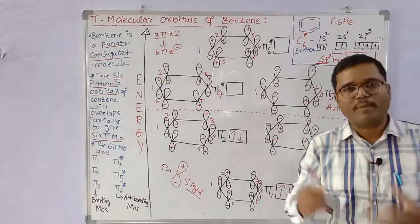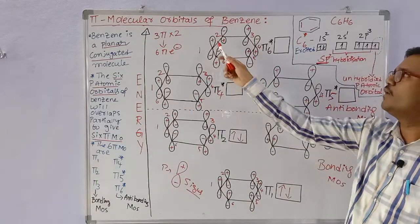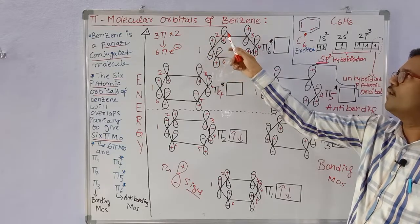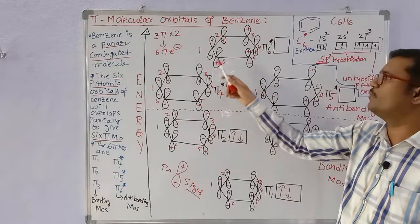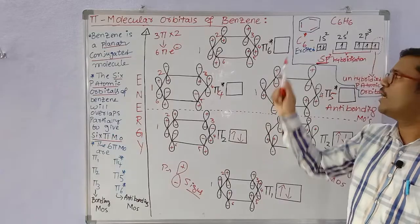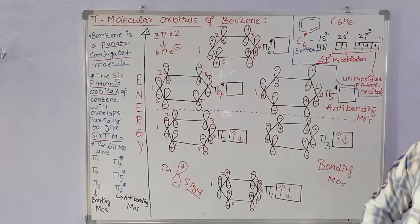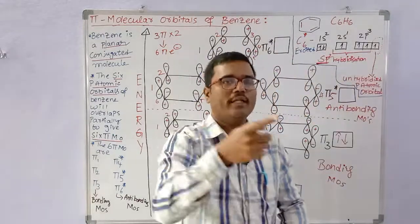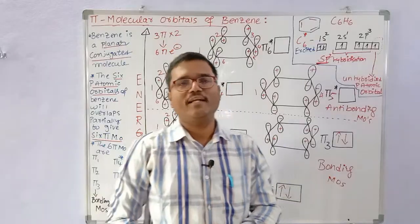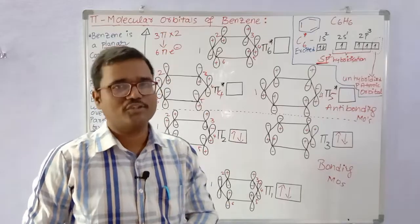Pi6* is the last molecular orbital. In pi6* all lobes are out of phase — going clockwise the top lobes alternate plus, minus, plus, minus, plus, minus, and the bottom lobes are minus, plus, minus, plus, minus, plus. This makes pi6* the highest energy anti-bonding molecular orbital. The plus and minus signs indicate the phase of the orbital lobes — they do not indicate electric charge.